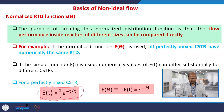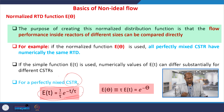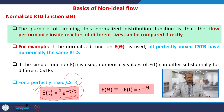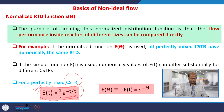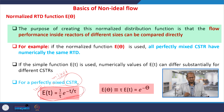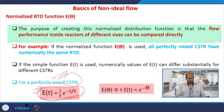For a CSTR reactor, E(θ) is usually expressed as e^(-θ). For a perfectly mixed CSTR, E(t) = (1/τ) × e^(-t/τ) — we will discuss the derivation later. If we substitute this E(t) into the expression E(θ) = τ × E(t), then we get E(θ) = e^(-θ). The dimensionless parameter θ = t/τ, and with this E(θ) expression we can analyze the RTD in dimensionless form.